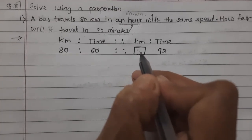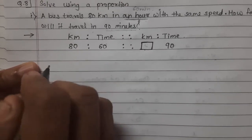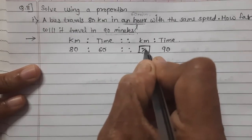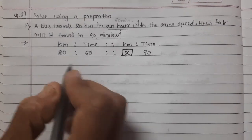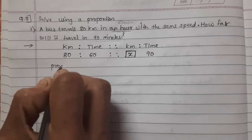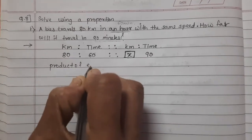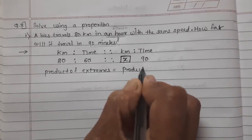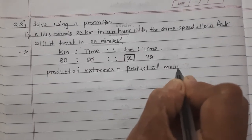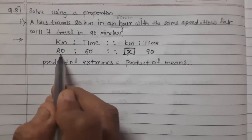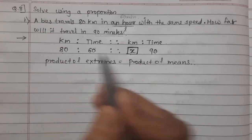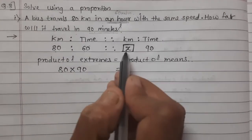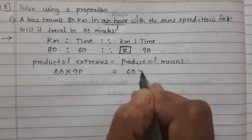Let this distance be x. So for 90 minutes we write x kilometers. The proportion is 80 : 60 = x : 90. Product of extremes is equal to product of means. The extremes are 80 and 90; the means are 60 and x. So 80 × 90 = 60 × x.